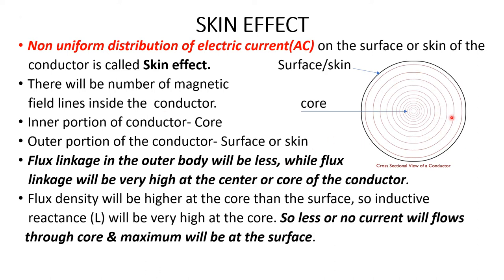Here you can see a cross-sectional view of a conductor. The outer part of the conductor is known as the surface or simply skin, and the inner part is known as the core. When alternating current flows through the conductor, there will be a number of magnetic field lines, and the core will be the part with maximum flux linkage.